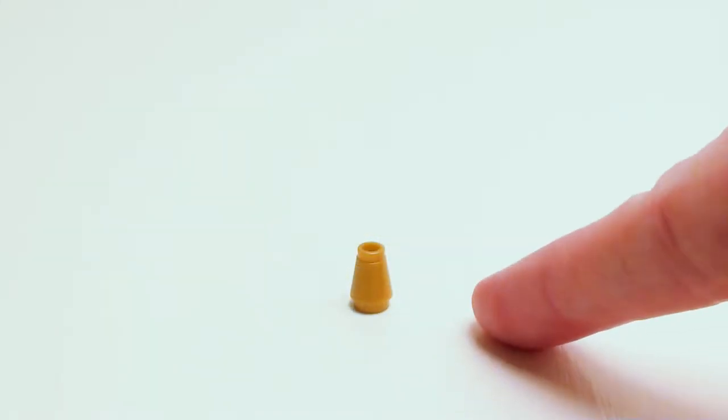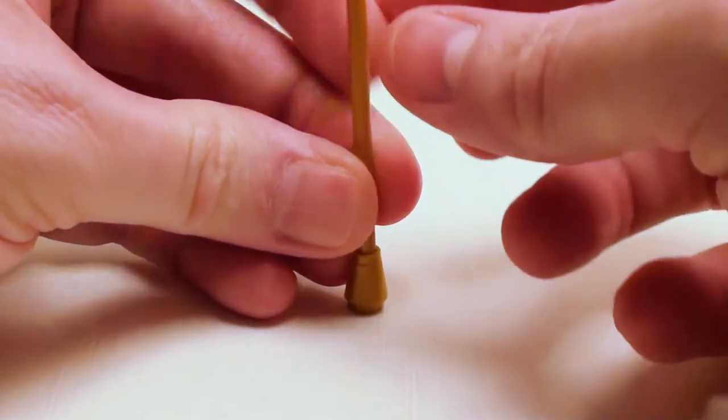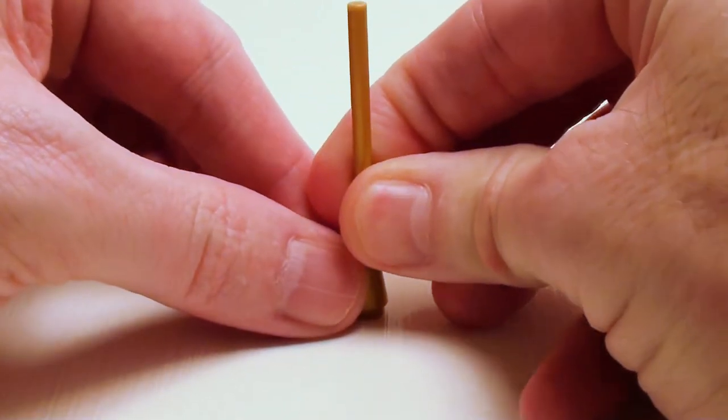Let's begin with the floor lamp starting with a 1 by 1 nose cone. Let's take a six stud long stick with flange. Place the portion of the flange into the nose cone.